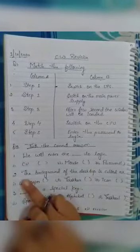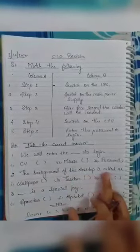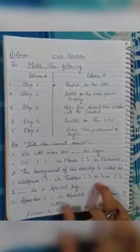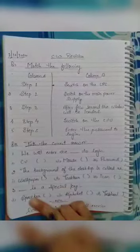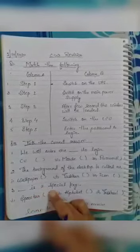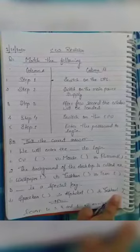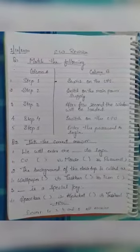Second question: the background of the desktop is called — options are wallpaper, taskbar, or CPU. Mark which answer is correct. Third question: dash is the special key — options are space bar, alphabet, or taskbar. Mark the correct answer.